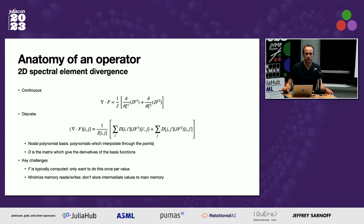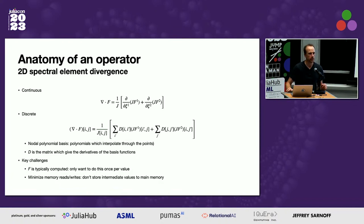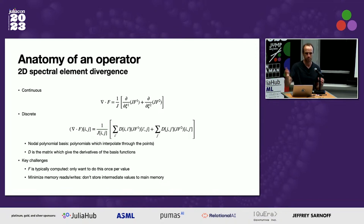There are a couple of challenges in how we implement these. F here is not actually a field typically — it's something we compute from a field. It's typically a flux, and you don't want to actually compute the flux and store it to memory; you want to compute it on the fly. The big thing is we want to minimize the amount of memory we're reading and writing. A lot of these algorithms end up being memory bound, so we want to limit the amount of data we're moving around.